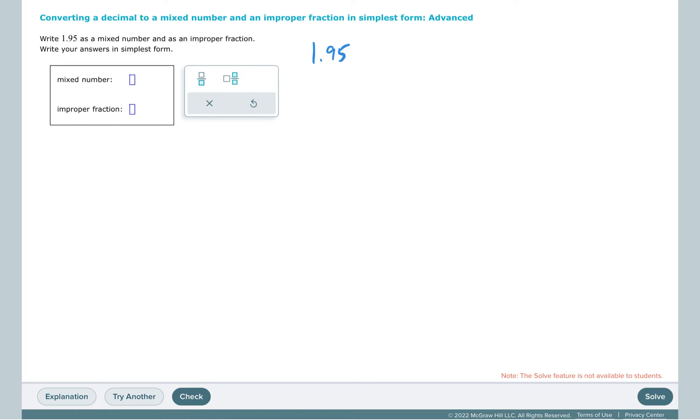For this topic, we're changing a decimal to a mixed number and an improper fraction, both in their simplest form. To do this, read your decimal with place value: 1 and 95 hundredths. So write down exactly what you hear, and then simplify the fraction if necessary.